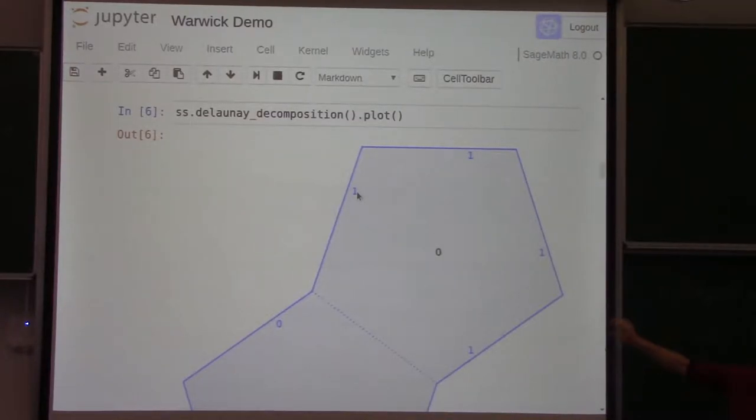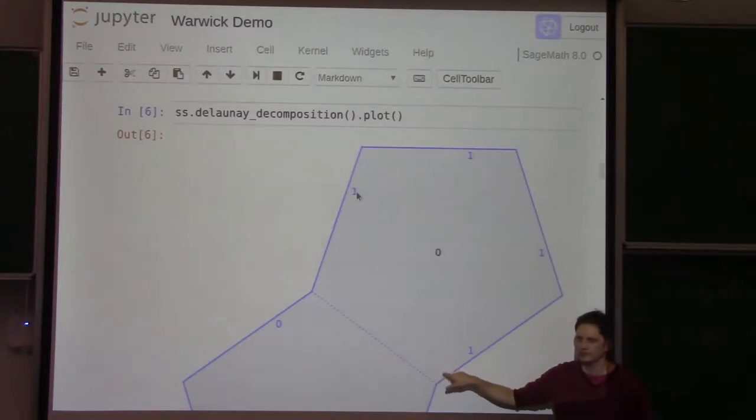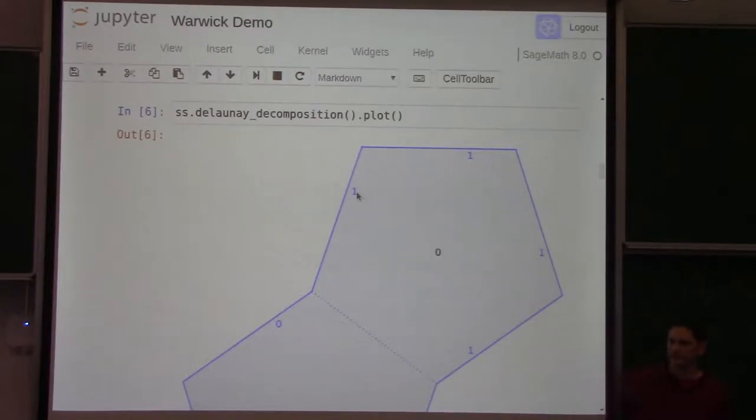So what you can do first is you can compute its Delaunay decomposition. So I took that original surface and I computed its Delaunay decomposition. And then this is what you get. So Delaunay decomposition means you sort of inflate maximal circles and then take the convex hull of those maximal circles. The maximal circle will touch some cone singularities, which are basically the vertices in this picture. And then you take the convex hull of those and then you do a cell decomposition of the surface.